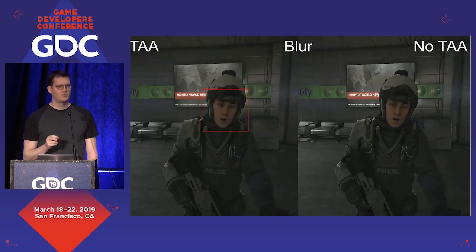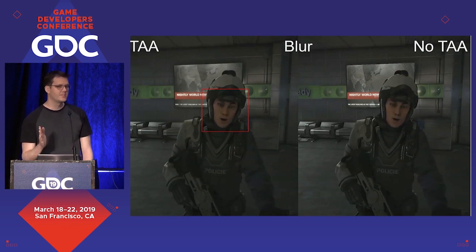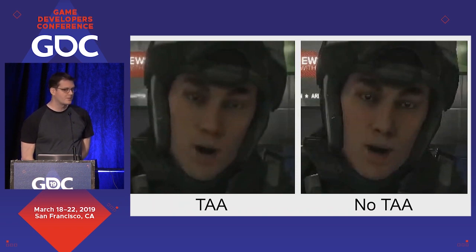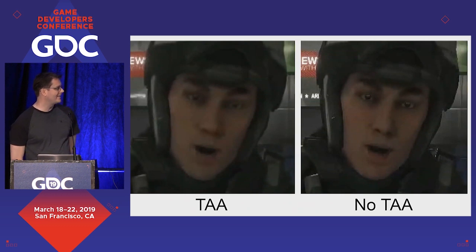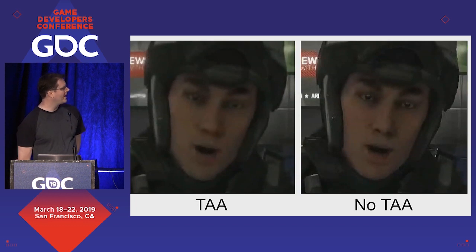The first problem is that TAA will add substantial blurring to your image, even with the best implementations. Here's a shot from the game: on the left we have TAA, on the right TAA is turned off with no anti-aliasing — just the raw output. Zooming into the character's face, the TAA version is substantially blurrier. The text on the background screen is crisp and legible on the right, but with TAA it gets blurred to the point where the small text is completely destroyed. We also lose some specular in the character's eyes.